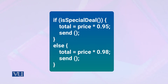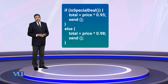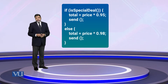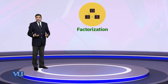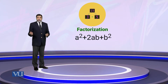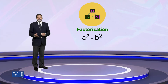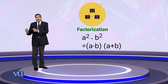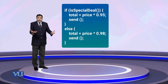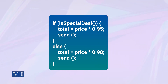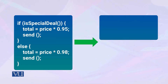Both the main clause and the else clause repeat a common piece of code. This is similar to factorization in algebra — for example, a-squared plus 2ab plus b-squared equals (a+b)-squared, or a-squared minus b-squared equals (a-b)(a+b). Similarly, here we can identify the common thing and remove it to one place. So you can see the piece of code becomes simpler.